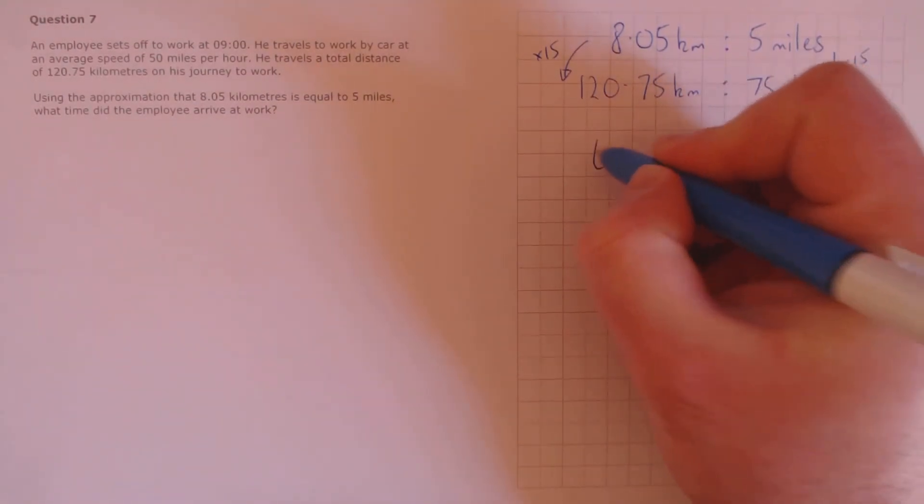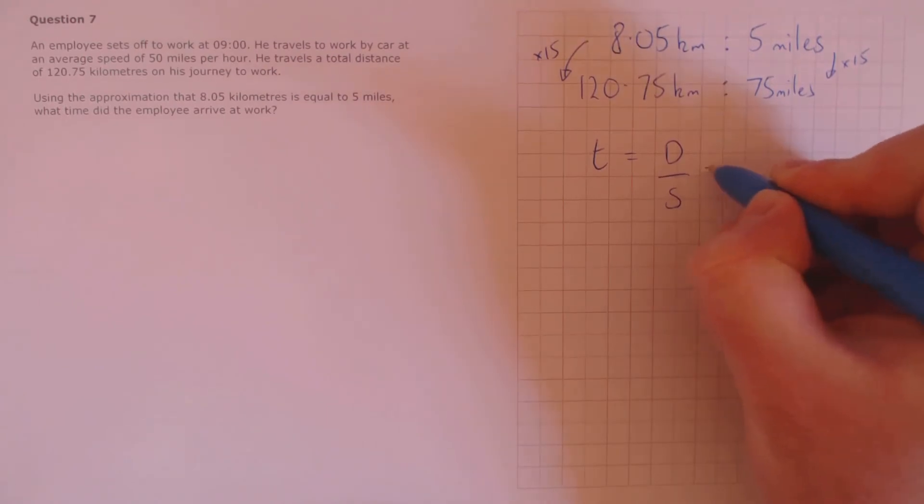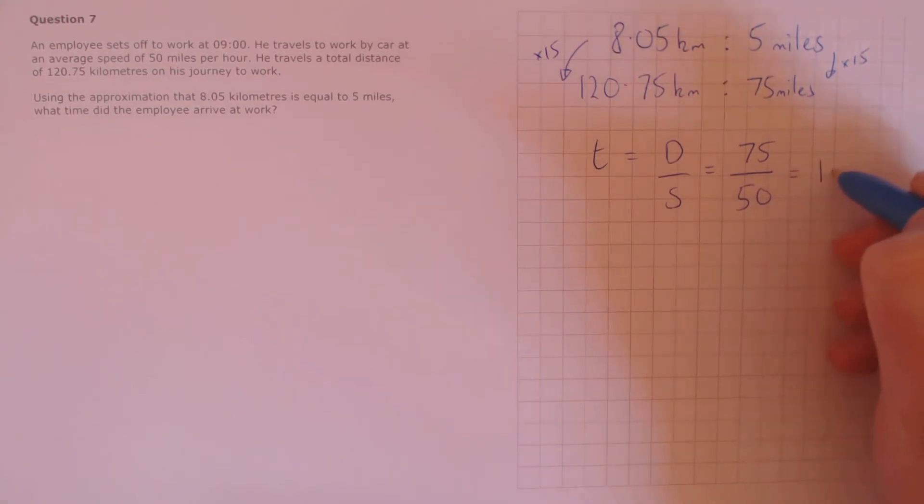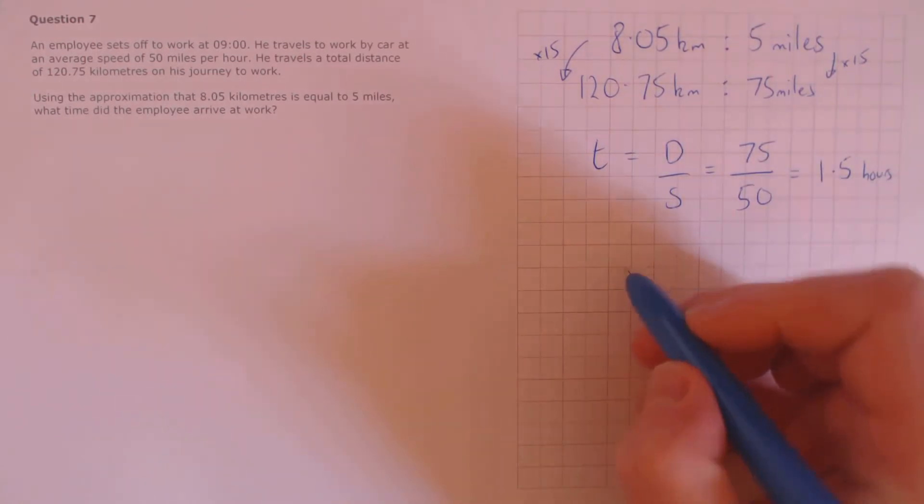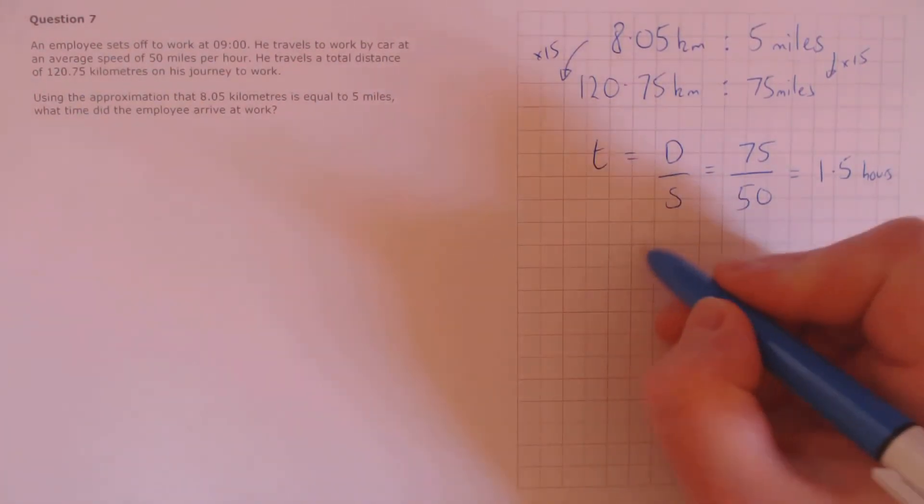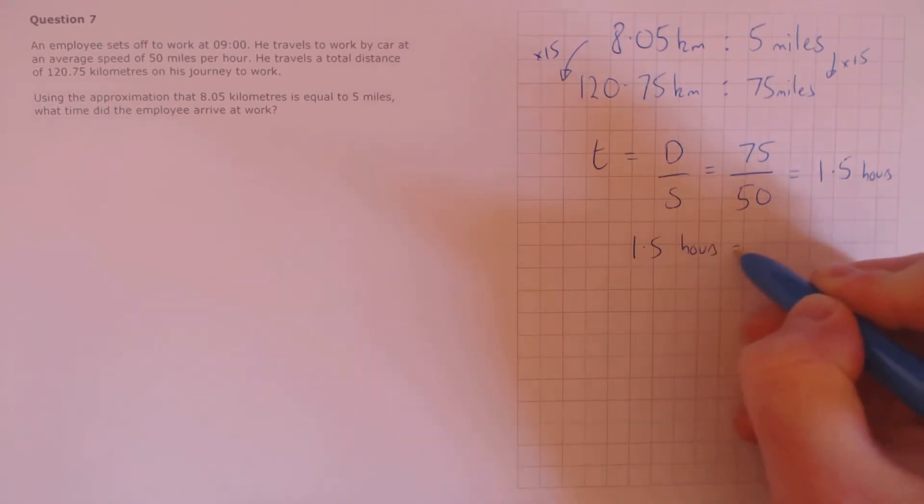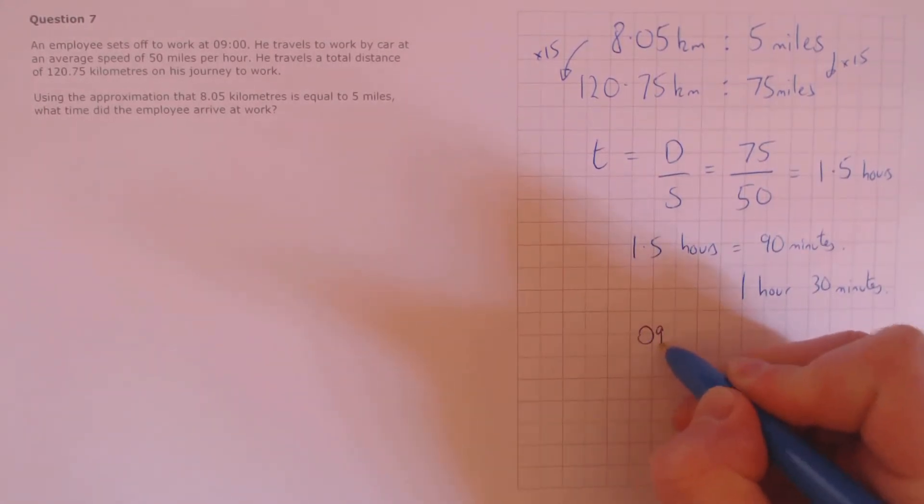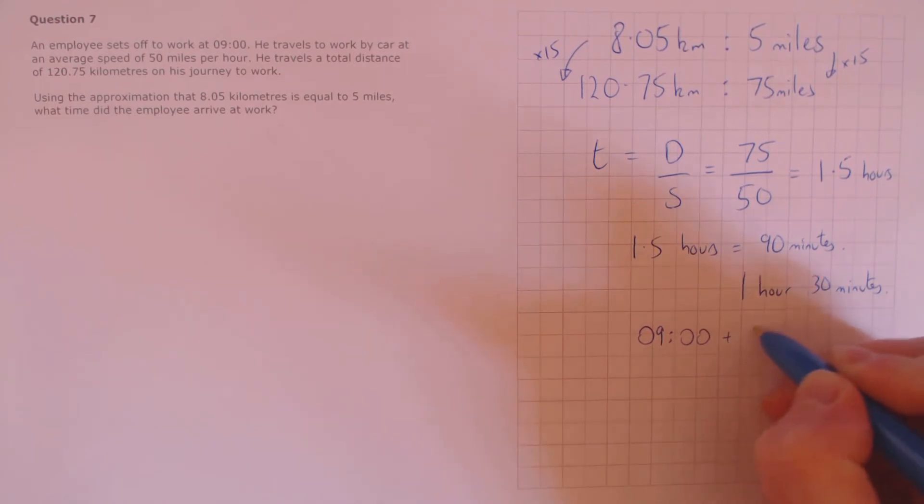Our next step is to work out the time that it took. Time is distance over speed, and we know the distance is 75 miles and the speed is 50 miles per hour, which is 1.5. This is the time in hours currently, so we need to change to minutes. 1.5 hours is 90 minutes, or we could call that 1 hour 30 minutes. Finally, if you set off at 9 o'clock and we need to add on 1 hour 30, well then he arrives at 10:30.